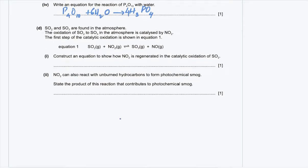Part D: sulfur dioxide and sulfur trioxide are found in the atmosphere. The oxidation of sulfur dioxide to sulfur trioxide is catalyzed by nitrogen dioxide. The first step is the reaction between SO₂ and NO₂, forming SO₃. Sulfur is oxidized from +4 to +6, while nitrogen is reduced from +4 to +2.